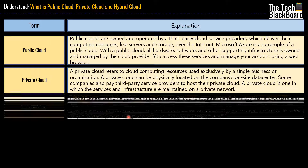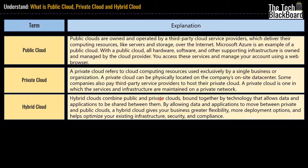Now let's understand hybrid cloud. Hybrid is a combination of both public cloud and private cloud. Suppose your company already has its own data center that handles normal business days. However, on weekends or festivals, a spike in sales is expected. To handle this short-term spike in demand, you use public cloud. This use of your existing data center for normal days while leveraging public cloud to handle spikes is known as hybrid cloud — a mix of on-premise infrastructure, private cloud services, and public cloud.